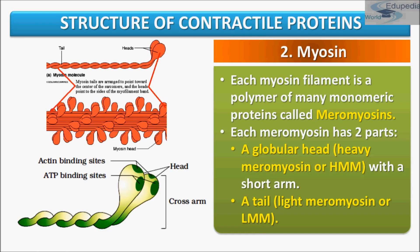Each myosin has two important parts: a globular head with a short arm, called HMM, and a tail called LMM (light meromyosin). The HMM component — the head and the short arm — projects outwards at regular distance and angle from each other from the surface of the polymerized myosin filament, and this is known as the cross arm. Myosin tails are arranged pointing towards the center of the sarcomere, and the head points to the side of the myofilament band.